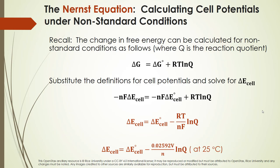Let's talk about the Nernst Equation, because this gives us a way to calculate cell potentials under non-standard conditions — in other words, when the concentration is not one molar and the partial pressure is not one atmosphere. We're going to derive the Nernst Equation, show where it comes from, use it in an example, and then apply it to a concentration cell.